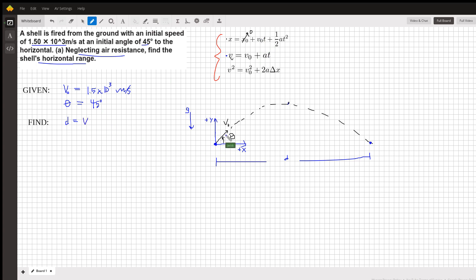Now we have to break this velocity vector into its components, and we do that by using trig. So the velocity of this projectile in the x direction is just v naught cosine theta, and we need to multiply that by time t.